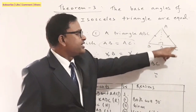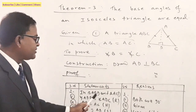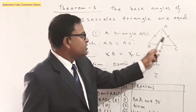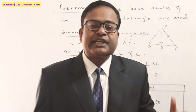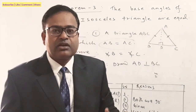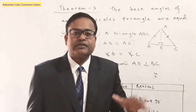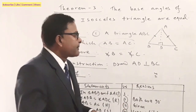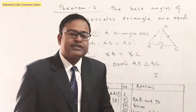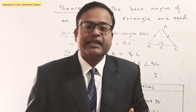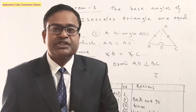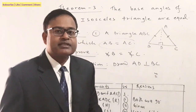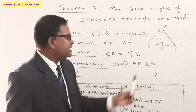In triangle ABD and triangle ACD, we use the RHS (Right angle-Hypotenuse-Side) congruency test. Statement 1: angle ADB equals angle ADC — both are 90 degrees according to our construction. There are five congruency tests for triangles, and here we apply RHS.